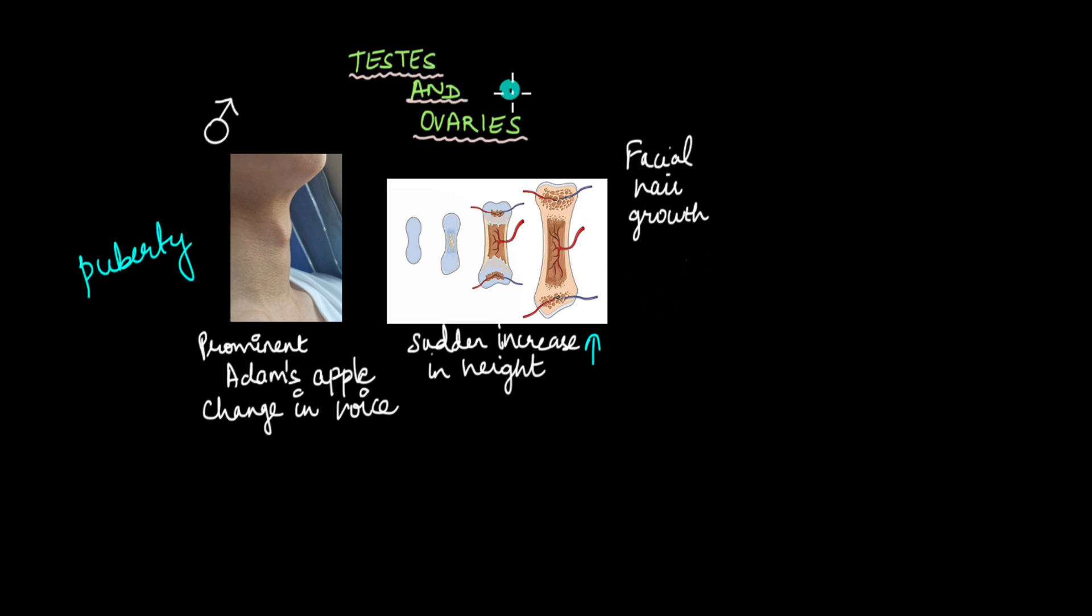And it all happens because of specific hormones secreted by structures like the testes in males and ovaries in females. Now this doesn't mean that these hormones are secreted only at puberty. You have these hormones throughout your life. It's just their level increases at the onset of puberty, which is what leads to these characters appearing at the onset of puberty.